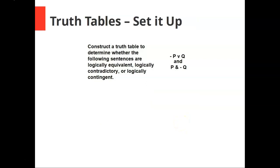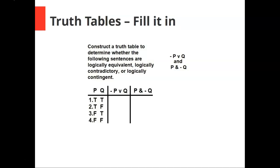Another example: not p or q, and p and not q. We set up our truth table and now we can fill it in. For our disjunction, it's a disjunction of not p and q, so before we fill in the disjunction we fill in not p — take the p column and flip it. A disjunction is only false when both disjuncts are false, so our column is true, false, true, true.